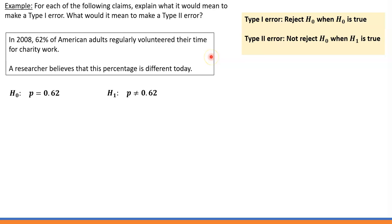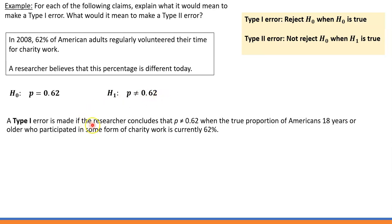Let's try it. In 2008, 62% of American adults regularly volunteered their time for charity work — that's the null hypothesis, H0: p = 0.62. The researcher believes this percentage is different today — that's the alternative hypothesis, H1: p ≠ 0.62. A Type 1 error is made when we reject the null hypothesis when in fact it's true.